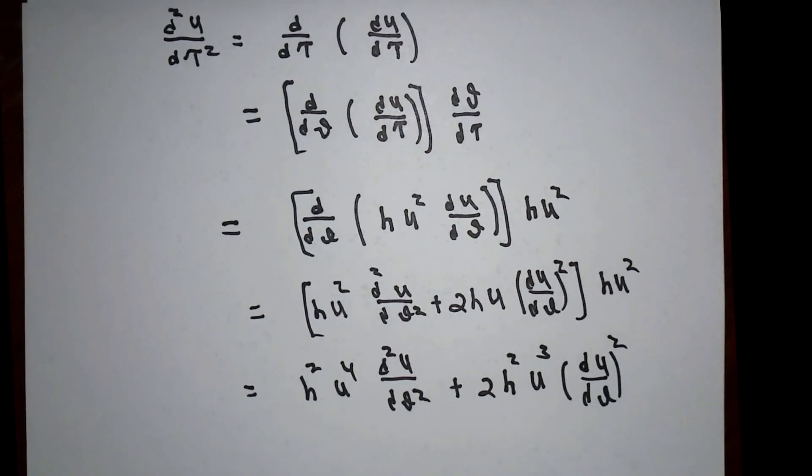Using the chain rule again, and the fact that d theta d tau is h over r squared, u squared, that is to say h times u squared, the second derivative of u with respect to proper time turns out to be equal to this.